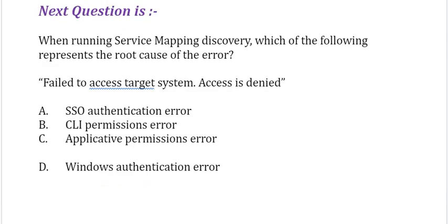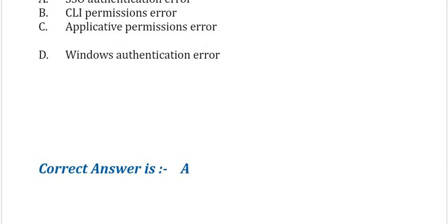Next question: When running service mapping discovery, which of the following represents the root cause of the error: 'Fail to access target system — access is denied'? Option A: SSO authentication error. Option B: CLI permissions error. Option C: applicative permissions error. Option D: Windows authentication error. Correct answer is Option A.